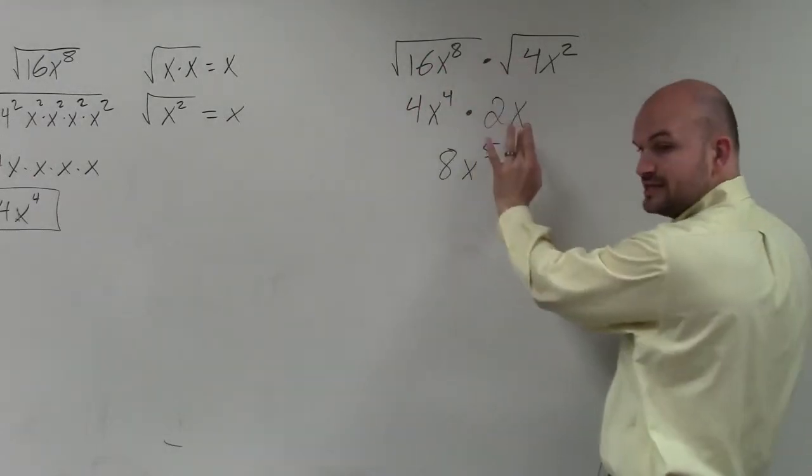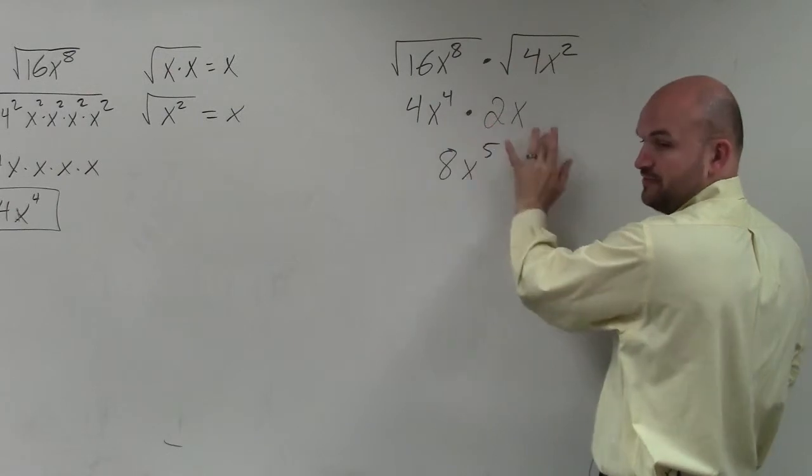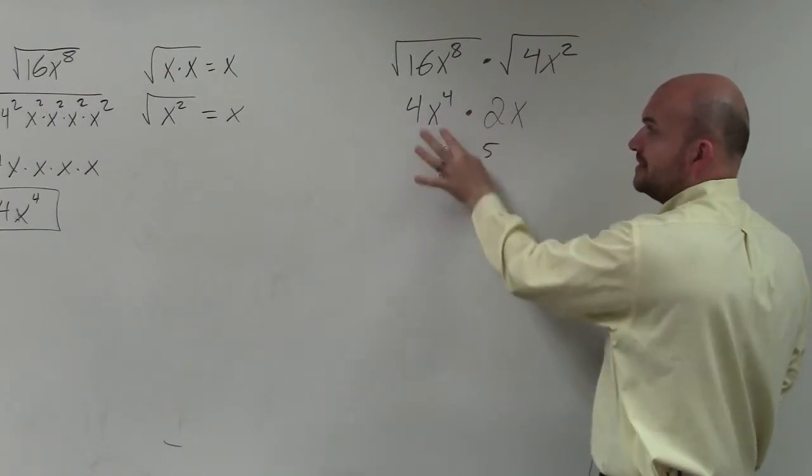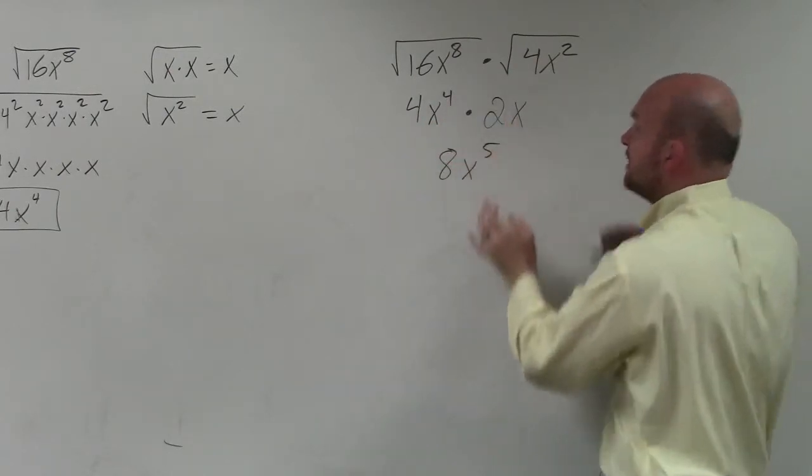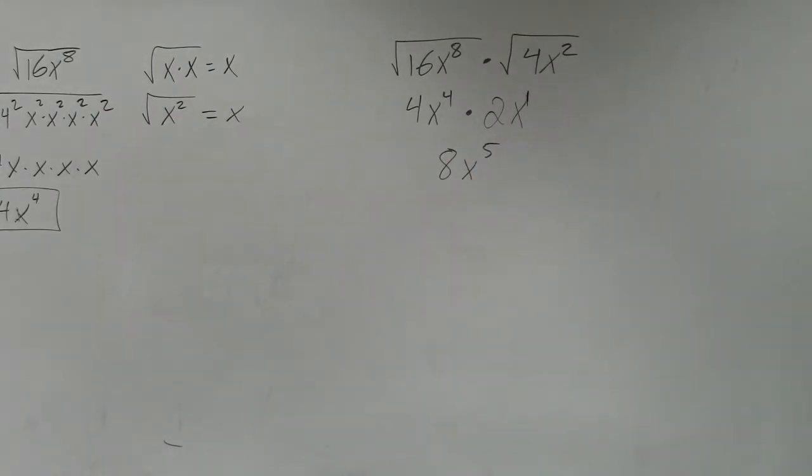So once you simplify each one, which I did before, then you just multiply. And you can only multiply numbers and your variables. So 4 times 2 is 8. And then remember, when you multiply exponents, you add the powers. And this has a little 1 up there. So it becomes 5. Does that make sense?